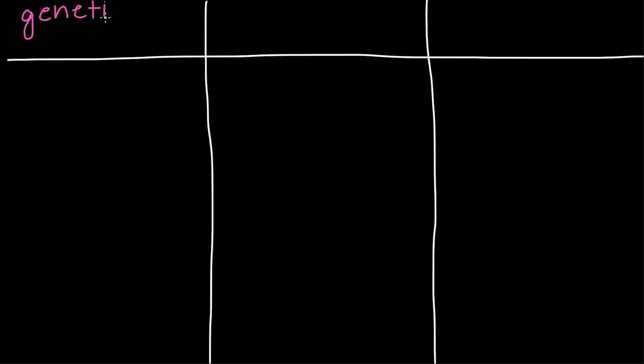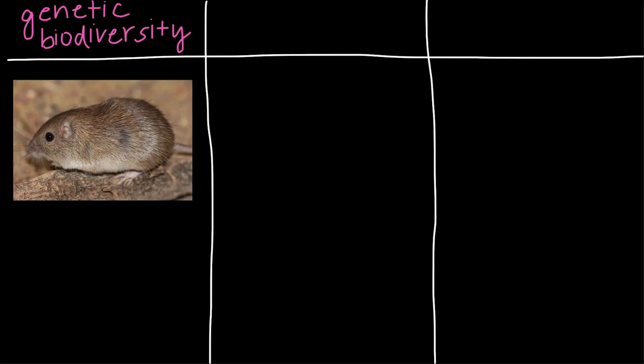So the first and smallest scale level is going to be genetic biodiversity, which is just the genetic variation within a group of organisms. And a really great example of this kind of biodiversity is the rock pocket mouse. And I know, that's a mouthful of words to say, but it's really cute. I mean, look at this picture.